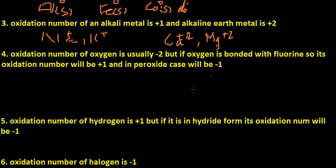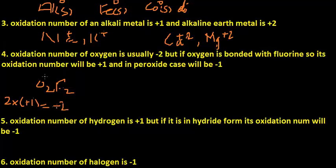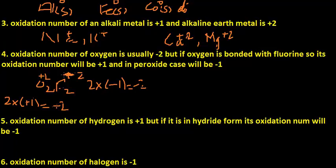Rule number four: the oxidation number of oxygen is usually minus two. However, if oxygen is bonded with fluorine, its oxidation number will be plus one, and in the case of a peroxide it will be minus one. For example, in O₂F₂, oxygen is bonded with fluorine so its oxidation number is plus one. Two oxygens are present, so 2 × (+1) = +2. Fluorine is a halogen and halogens usually have minus one; two fluorines give 2 × (−1) = −2. The sum is plus two minus two, which equals zero.